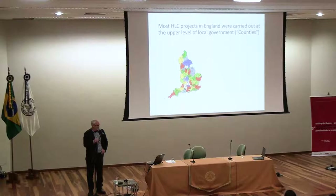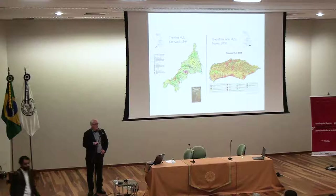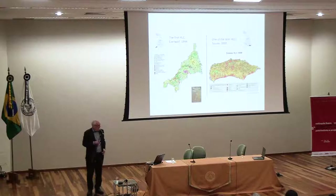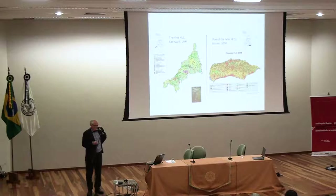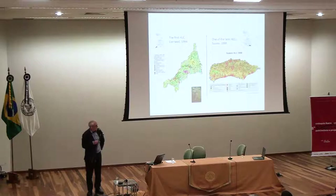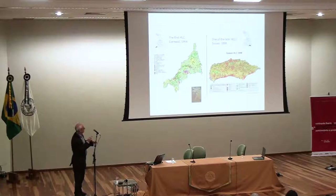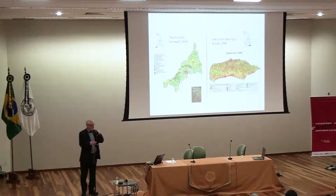As the programme moved from its origins in 1994 in a county called Cornwall in south-west England — the first HLC was produced on paper with coloured pencils — shortly after that in the later 1990s, we began to use geographical information systems, and the method got a lot more detailed and complicated, so that by about 2010 the county of Sussex in south-east England shows the extent to which the method became more sophisticated and nuanced as the years went on.